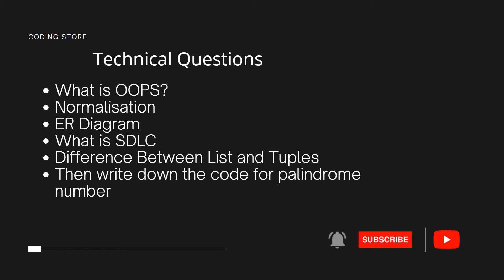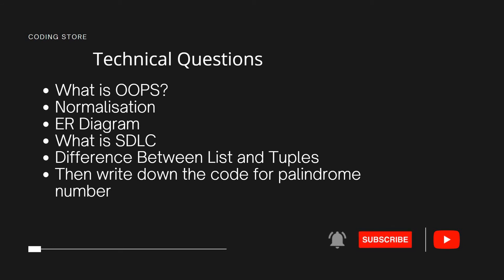Then they asked about the DBMS section — what is normalization, what is an ER diagram (entity relationship diagram). Then they asked about SDLC, which is the Software Development Life Cycle. This candidate had Python experience, so they asked about differences related to that. Then the third part was a coding task: write down code for a palindrome number.